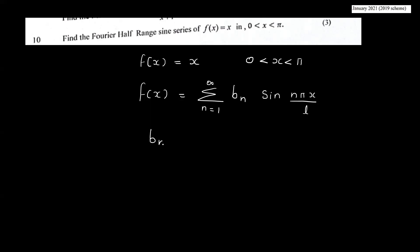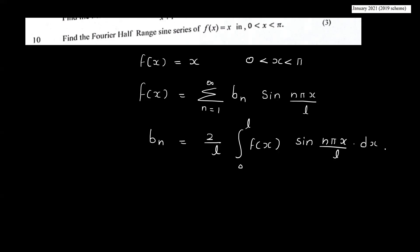Now, bn is equal to 2 by l, integral 0 to l, f of x sin n pi x by l dx. This is our half-range sine series equation.